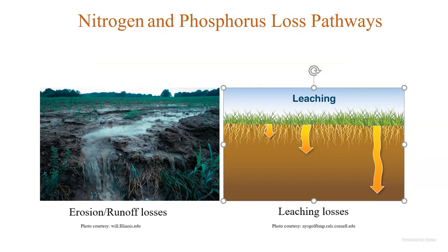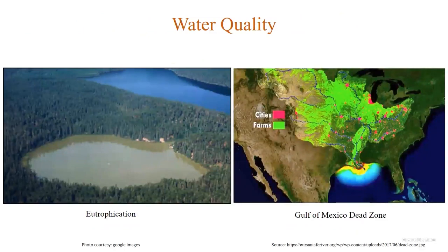Speaking of water quality, you are familiar with the term eutrophication, where a fresh water body turns green and full of algae. Another very prevalent issue is the Gulf of Mexico dead zone — fish kills and loss of aquatic habitats. All these water quality problems come from nutrients that originate from several places and eventually reach these reservoirs.